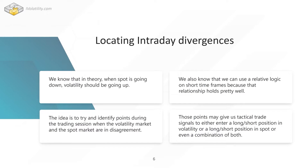The idea is to try and identify points during the trading session when the volatility market and the spot are in disagreement — they're diverging. Those points may give us a tactical trade signal to either enter a long or short position in volatility or in spot, or even a convergence trade where we'd be long volatility and long spot, or short spot and short volatility. We could express those views in different ways. The key idea is just to start looking into those specific divergences.